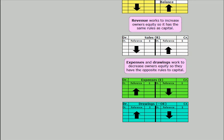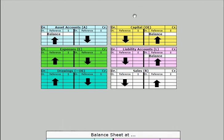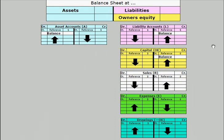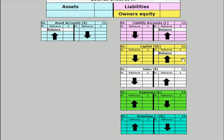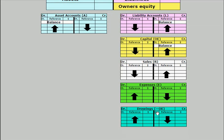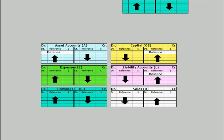Some students find that useful. Whether it's the method of six account types grouped together — those increased by debits on the left and those increased by credits on the right — or whether it's the balance sheet method, with assets having the reverse rules to equity accounts, remembering that sales increases capital and expenses and drawings reduce capital, you must know the double entry accounting rules.